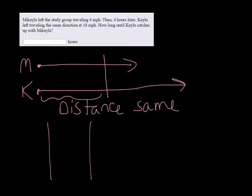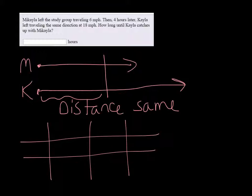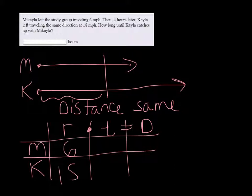I like to make a chart where we have that the rate times the time is equal to the distance, and we're looking at Mikayla and Kayla. Mikayla's going six miles per hour, and Kayla's going 18 miles per hour.